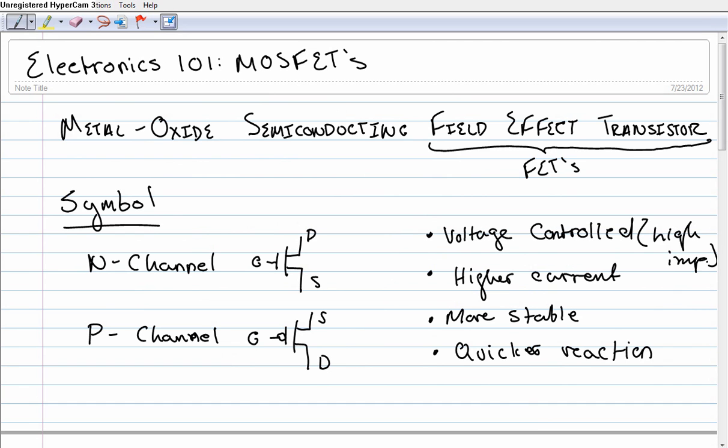So that's it for MOSFETs. They're really great devices if you're looking for something a little different than your BJT. So this has been Human Hard Drive. Thanks for watching.